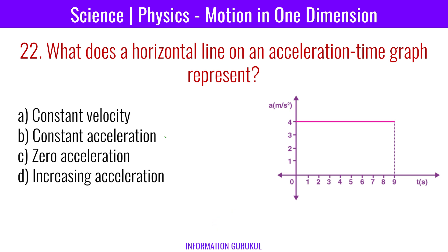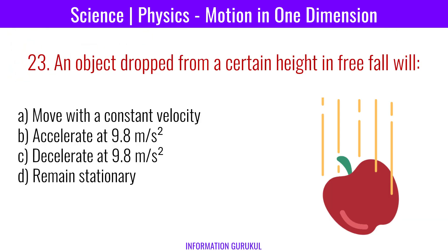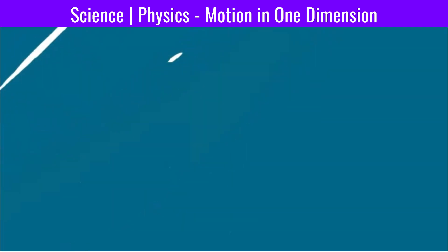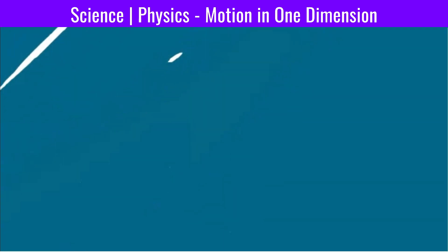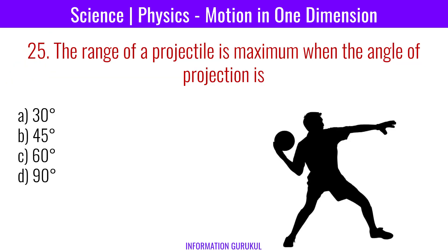What does a horizontal line on an acceleration-time graph represent? Constant acceleration. An object dropped from a certain height in free fall will accelerate at 9.8 meters per second squared. The time of flight of a projectile depends on both initial velocity and angle of projection.